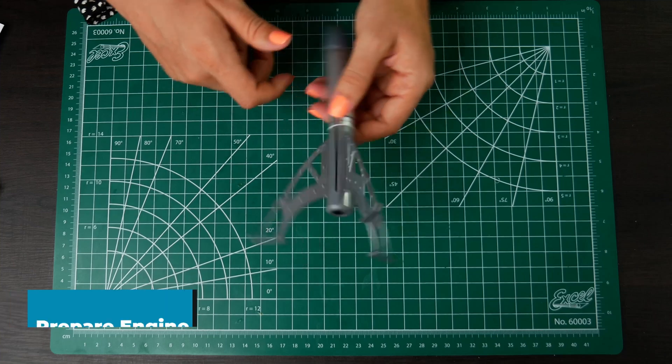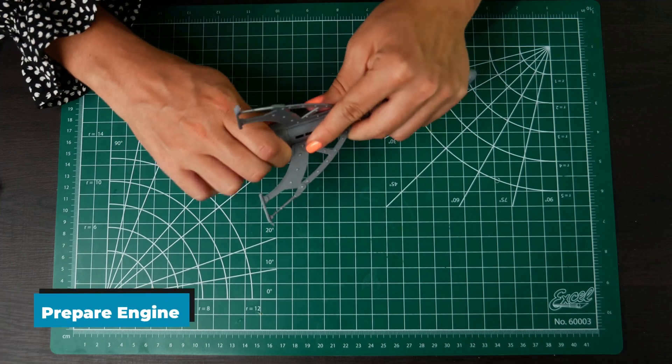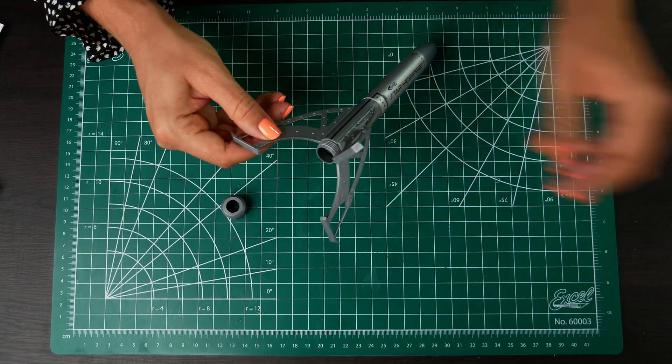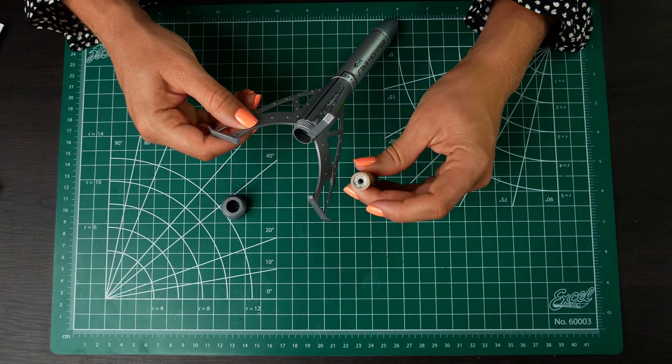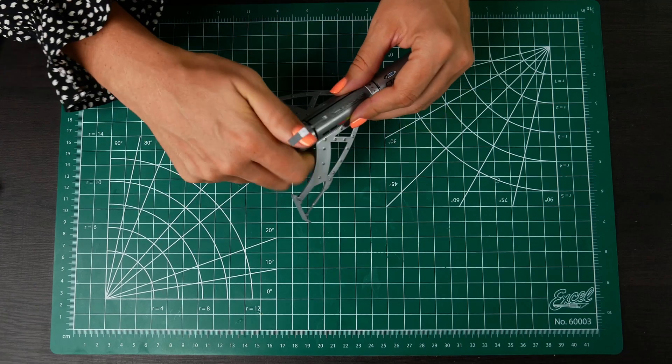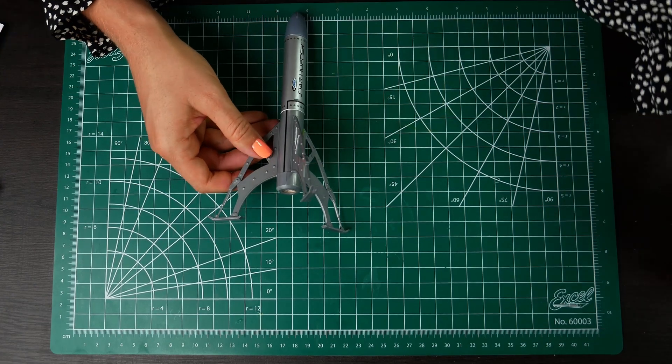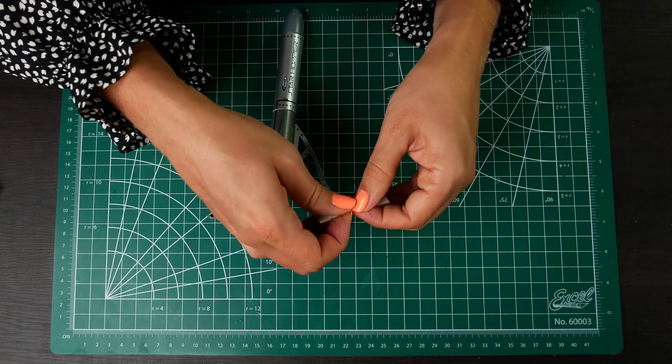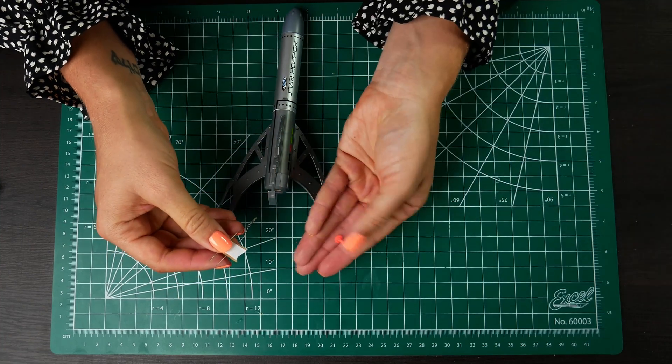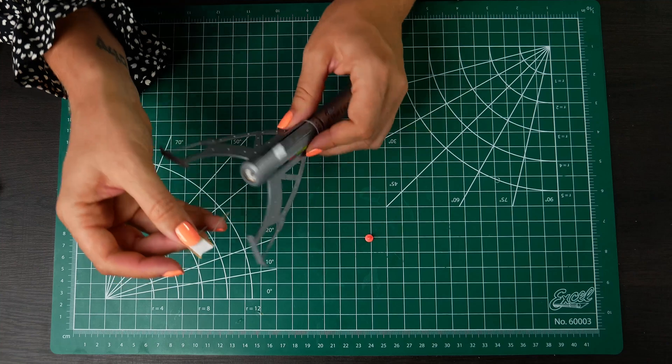And the final step is we're going to put an engine in so you can remove the engine retainer cap. Make sure the nozzle side is out and put your engine in and put the cap back on. Then we're just going to grab a starter. We'll just take one of them. Make sure you get a plug. So we'll put the starter in.